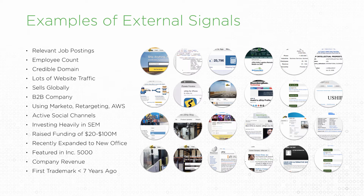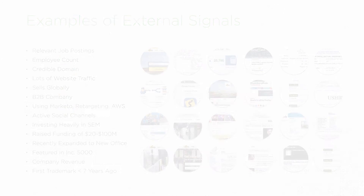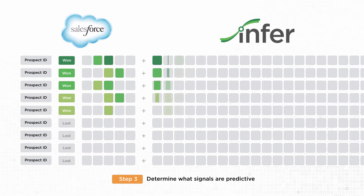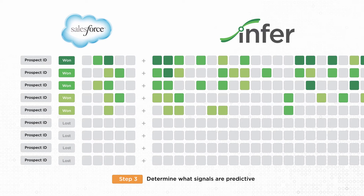With each seasonal release our library of external signals grows. Once we've expanded your data the next step is to understand what signals appear to be predictive. In some cases they'll be positively correlated with conversion, but we're also looking for negative signals that will help us filter out the noise.